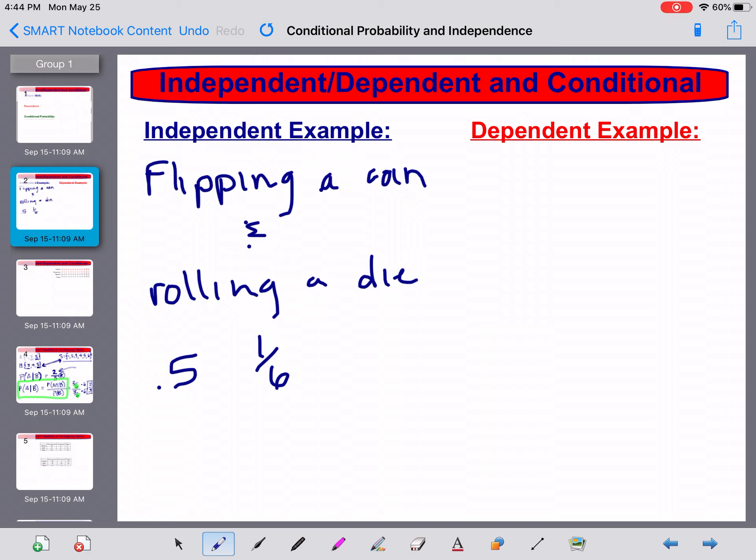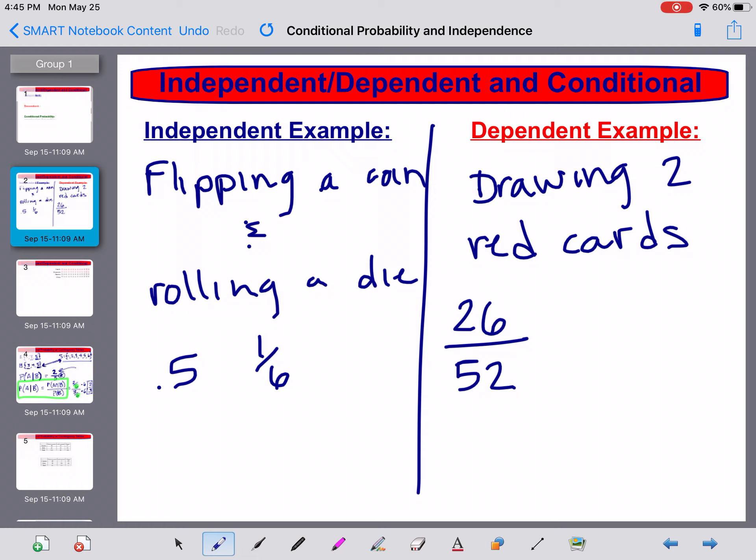Now that changes when I'm talking about dependent events. So something like, let's use a deck of cards. Let's say I'm drawing two red cards from a fair deck. So the first one, if I draw a red card, half of them are red, so I have a 50-50 shot. But the second one, since I already drew a red card, now that changes it. Now I only have 51 left and I only have 25 red ones. You can see that this first one influenced the probability of the second one. That's what makes it dependent.